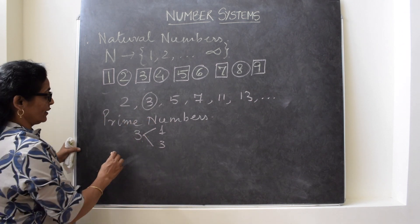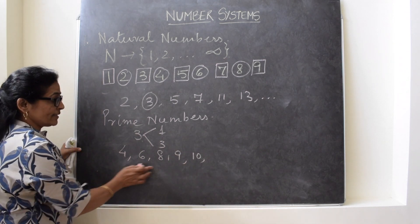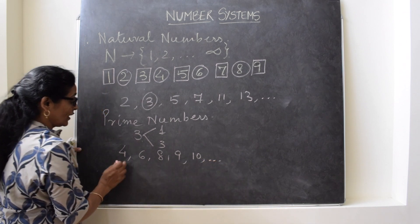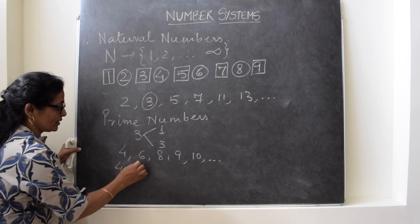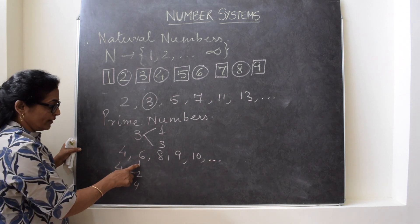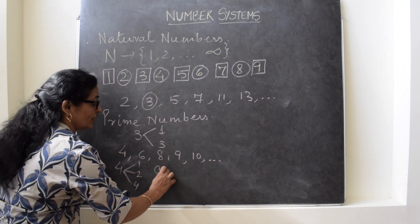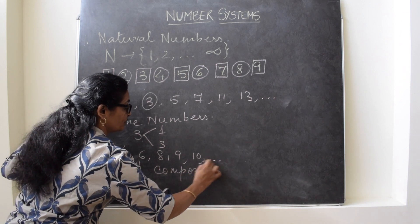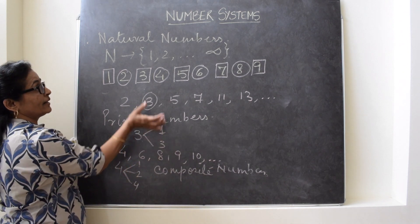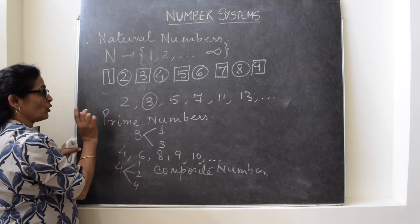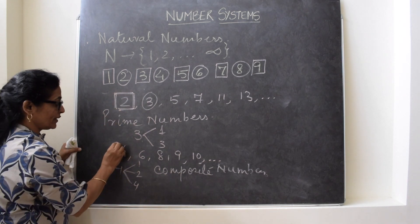The other type of numbers are 4, 6, 8, 9, 10. These numbers have factors more than 2. Like 4 has how many factors? 1, 2 and 4 — one, the number itself, and one more factor. These types of numbers are called composite numbers. It means that these numbers are contained in natural numbers only. The smallest prime number is 2 and the smallest composite number is 4.